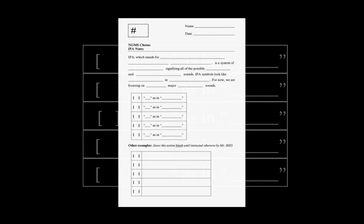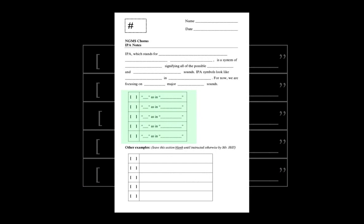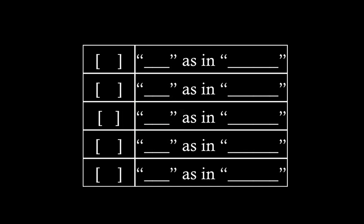If you look on your worksheet again, in the middle, you have a table where you can list all five of those and the basic information about them. So let's do that quickly. The first symbol we had was this one. That is the symbol for AH as in father is a good example word.